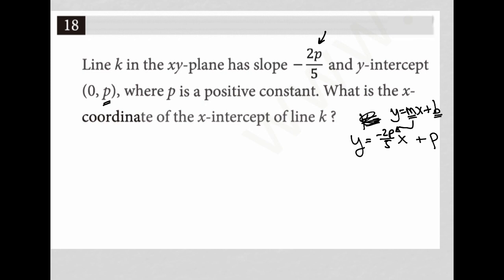The next sentence here says, what is the X coordinate of the X intercept of line K? So what does that tell me? I want to figure out what X is. Where?